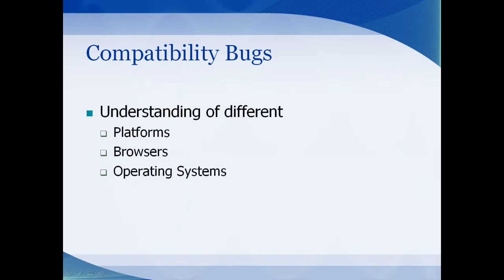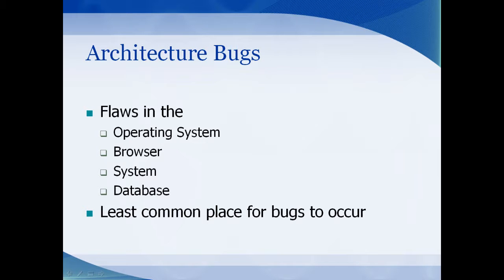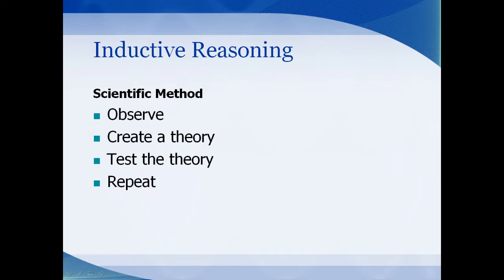Architecture bugs are the least common type of bug to occur. It's when there's a flaw in the operating system or in the compiler or database that you're using. Now the best way to find these bugs is to use inductive reasoning—you know, the old scientific method. You're going to observe what's happening, create your theory, test your theory, and repeat this process until your program works.